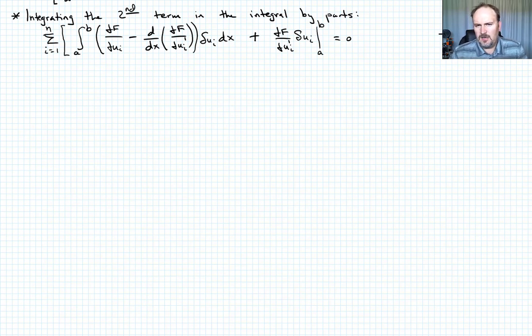So where do we go next? Well, remember equation three, which said that all the variations at the boundaries, so all the delta ui at the boundaries were equal to zero, right? And we achieved that by saying that the dependent variables u were all defined on the boundaries, okay?